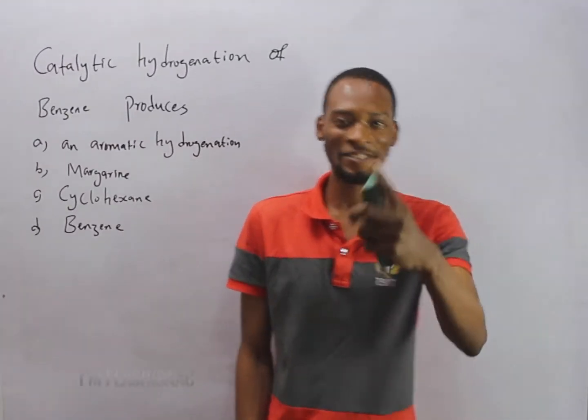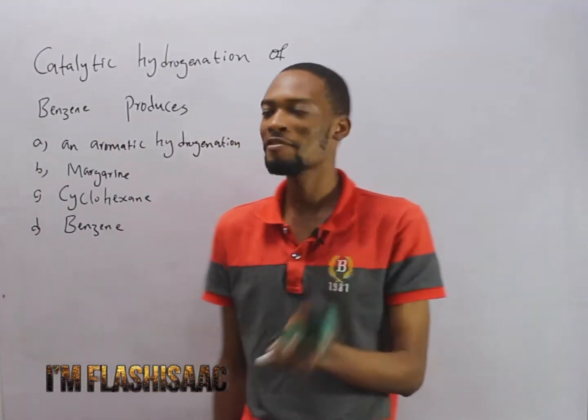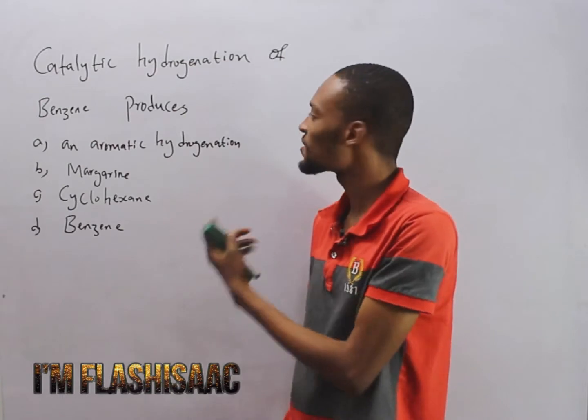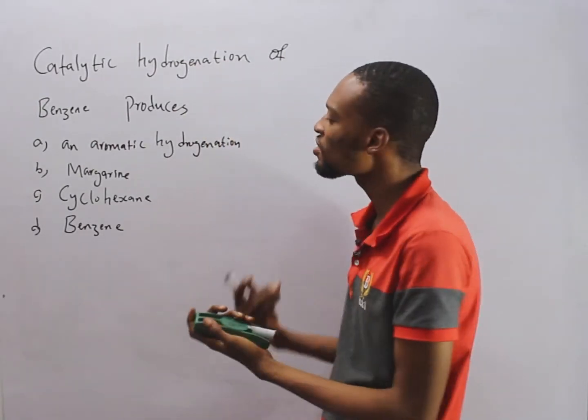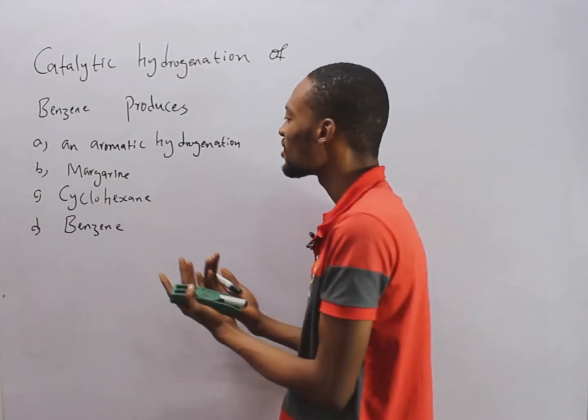Hello guys, I am Flash Isaac and today we shall be dealing with this chemistry question. It says, catalytic hydrogenation of benzene produces dash.